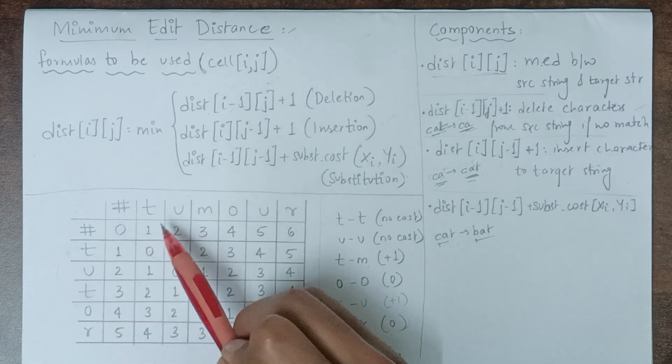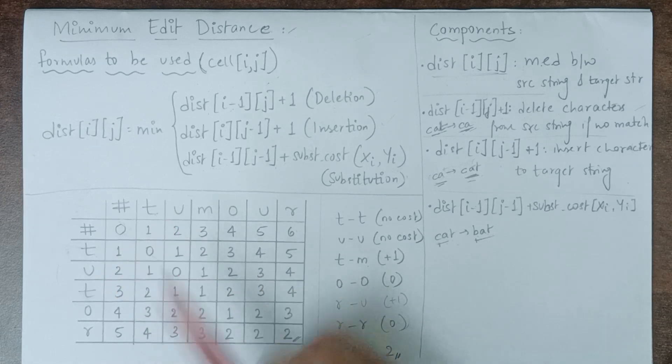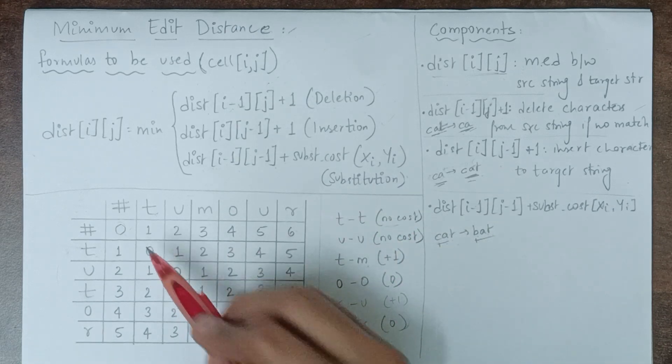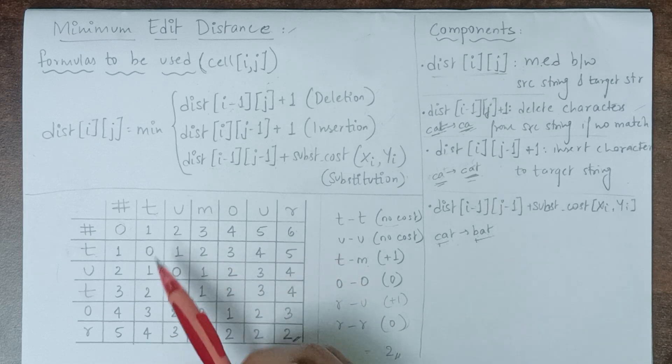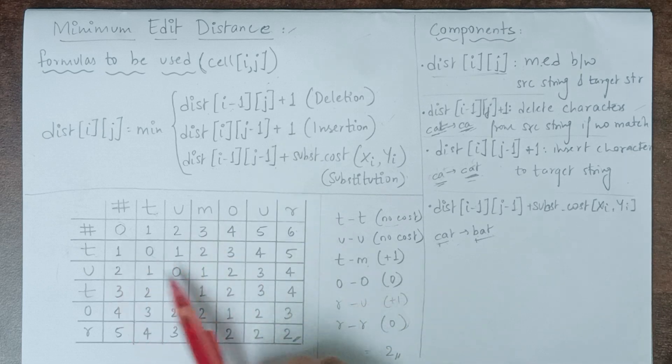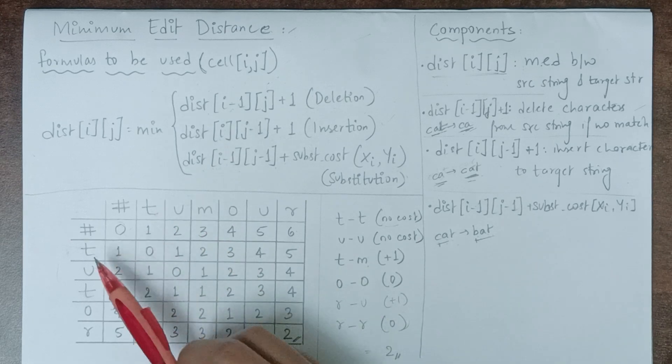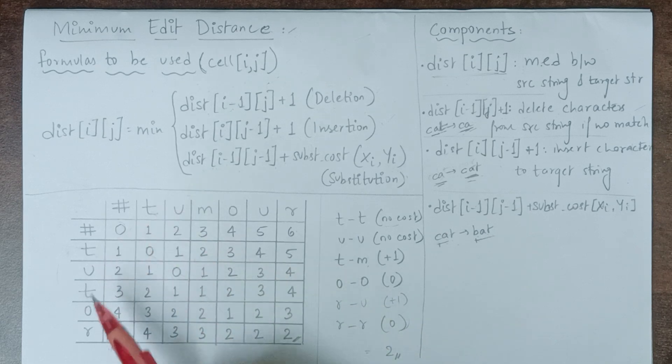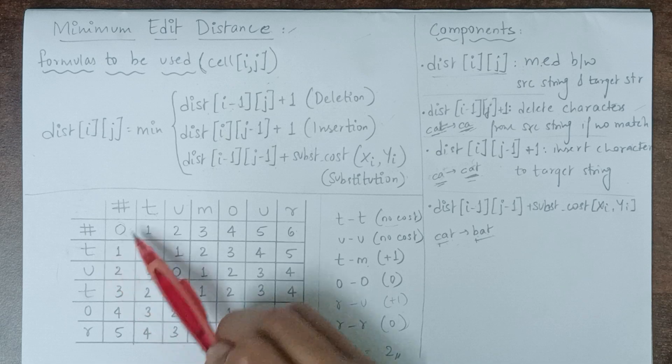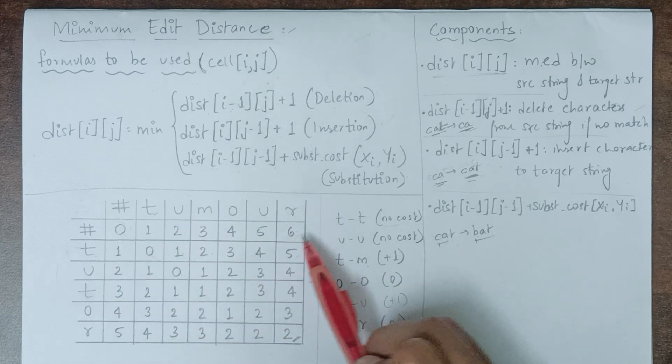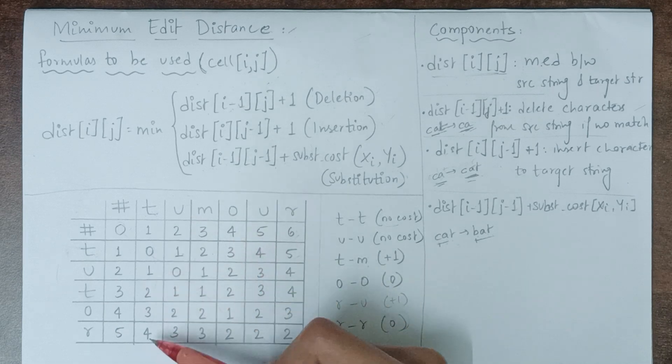In this algorithm, you have to notice the diagonal. We have 0, 1, 2, 3, 4, 5, 6 on both axes. Now here we have 't' and 't'. We notice there's no change from t to t, so there's no cost. We keep it as 0 since no process is required to change t to t. Now mark it from 0 to 1, 2, 3, 4, 5. From t to 'tu' you need to insert one character, so one change; from t to 'tum', two changes, and so on.